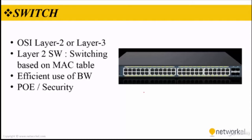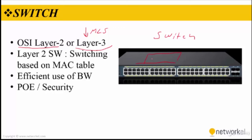You can see a switch here. This switch can be OSI layer 2 or layer 3 as well. If we are talking about a layer 3 switch, that is a multi-layer switch which can also perform routing. Layer 2 switches make switching decisions based on the MAC table, keeping a MAC address table and forwarding packets between ports using that MAC address table.